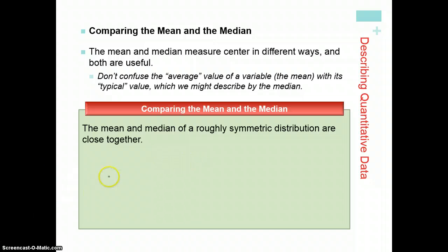Mean involves every single observation and therefore is influenced by every single observation, where median is based on position. If we have a mean and a median for a symmetric distribution, if it's perfectly symmetric, our mean and median will be the same, right smack dab in the middle.